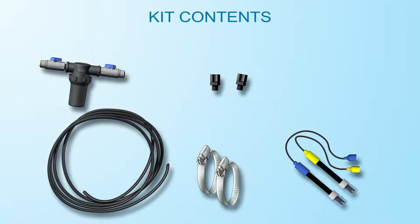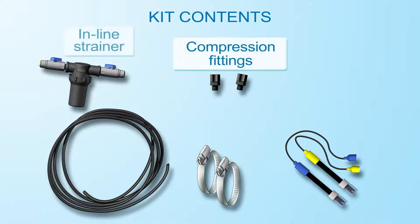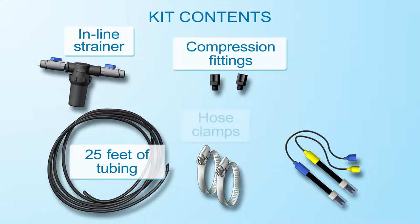The kit also includes two compression fittings, an in-line strainer, 25 feet of 3-8 inch tubing, two hose clamps, and the pH and ORP sensors.